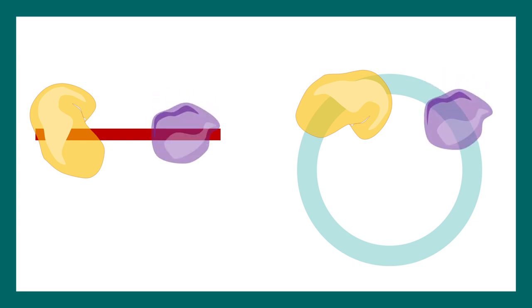In a cloning experiment, things are simple. We restriction digest our insert and the vector with the same restriction enzyme combinations. Here you can see we're going to digest our vector as well as our insert with these two restriction enzymes.